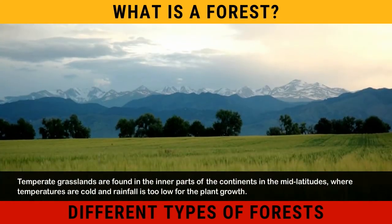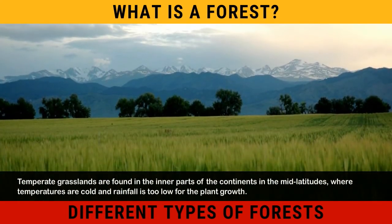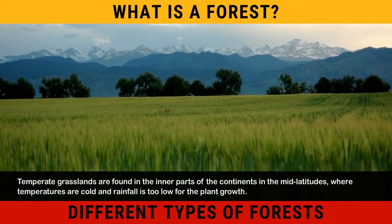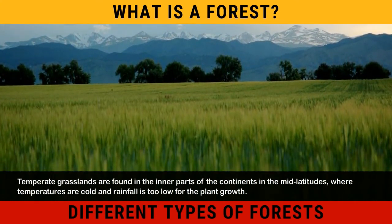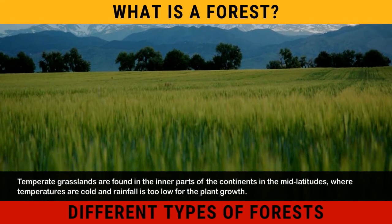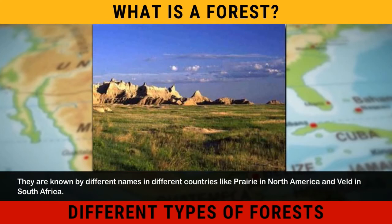Temperate grasslands are found in the inner parts of the continents, in the mid-latitudes, where temperatures are cold and rainfall is too low for plant growth. They are known by different names in different countries, like Prairie in North America and Veld in South Africa.